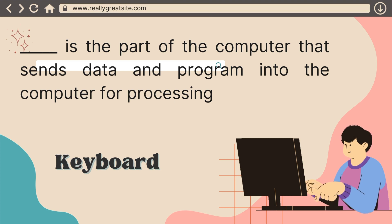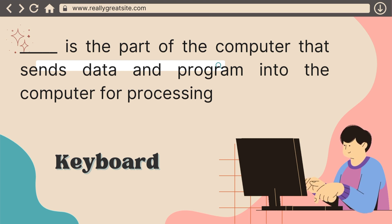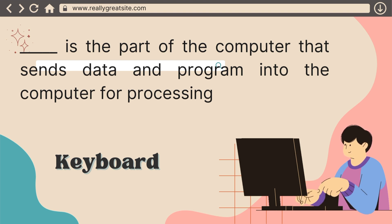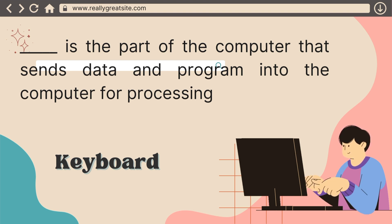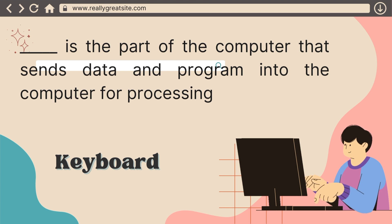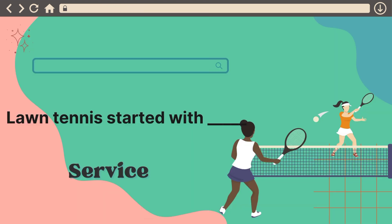The next one says: what is the part of the computer that sends data and programs into the computer for processing? It is the keyboard. The keyboard is used for typing — both alphabetical, numeric, and symbols. It is used to send data into the computer.